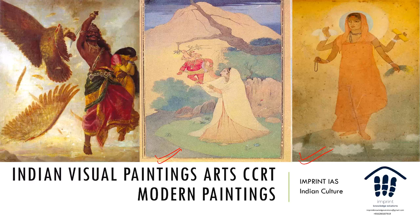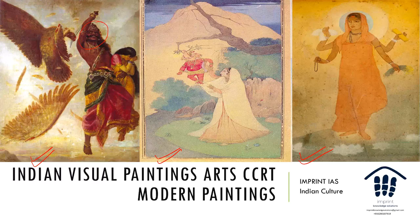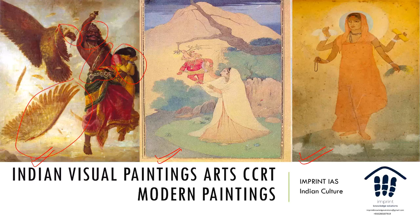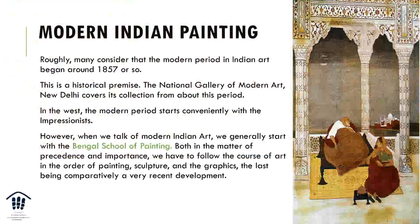Abanindranath Tagore was in some ways the father of the Bengal school. But if you look at Raja Ravi Varma, his paintings are a fusion of what was best in the West and the East. This is Ravana abducting Sita — look at the facial expressions of Ravana, look at how Sita is pleading to be saved, and check out Jatayu whose wing is being cut by Ravana. The jewellery and craftsmanship are remarkable. I find Raja Ravi Varma's paintings fascinating and beautiful.